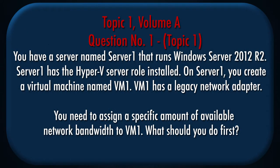Question number 1, Topic 1. You have a server named Server1 that runs Windows Server 2012 R2. Server1 has the Hyper-V server role installed. On Server1, you create a virtual machine named VM1. VM1 has a legacy network adapter. You need to assign a specific amount of available network bandwidth to VM1. What should you do first?